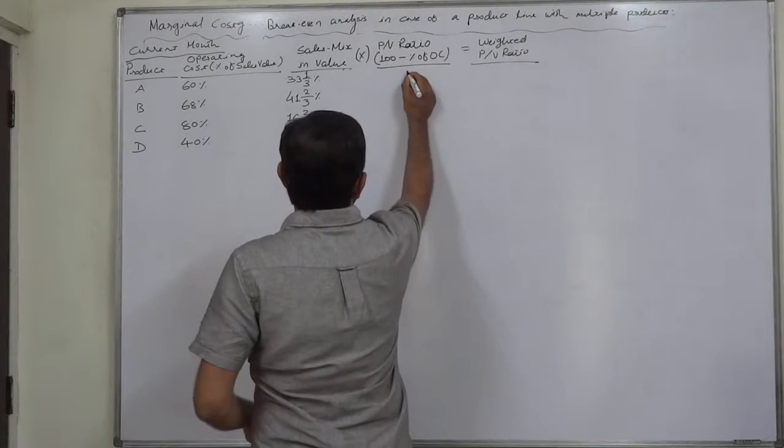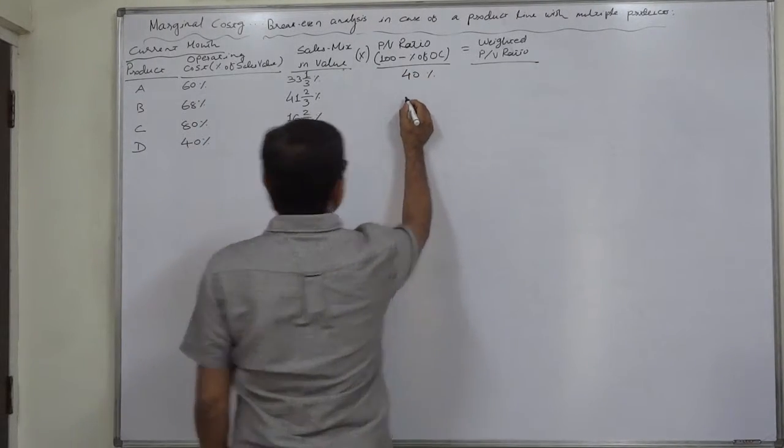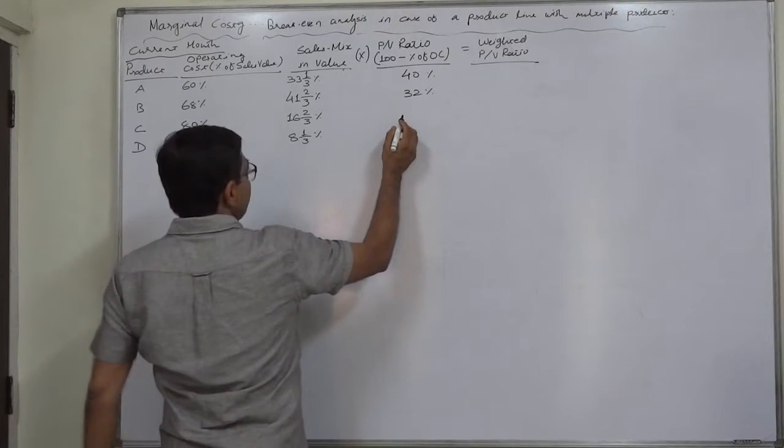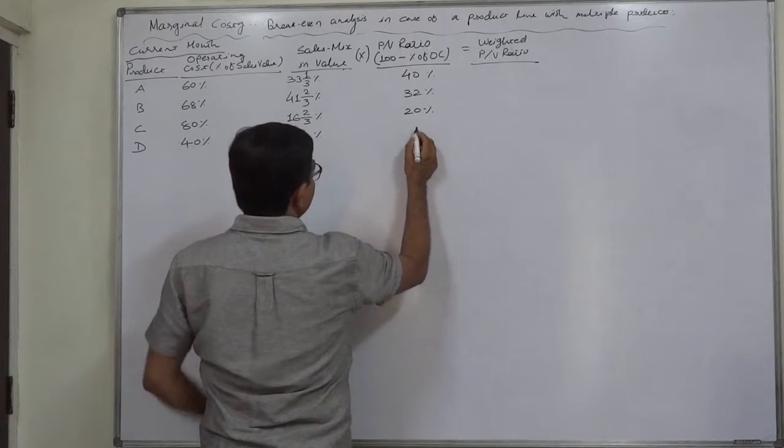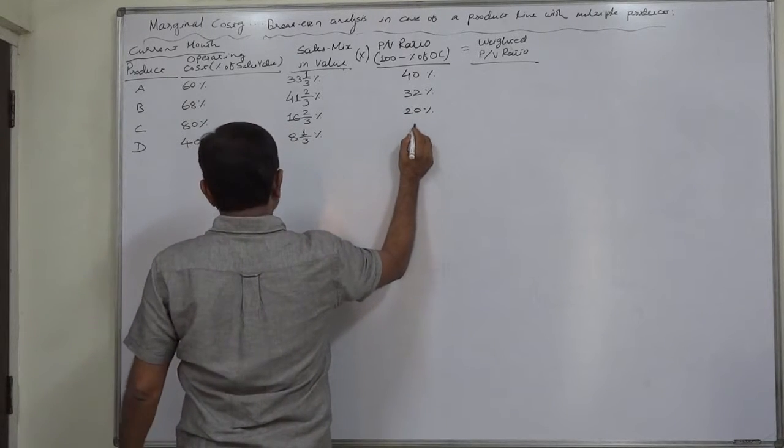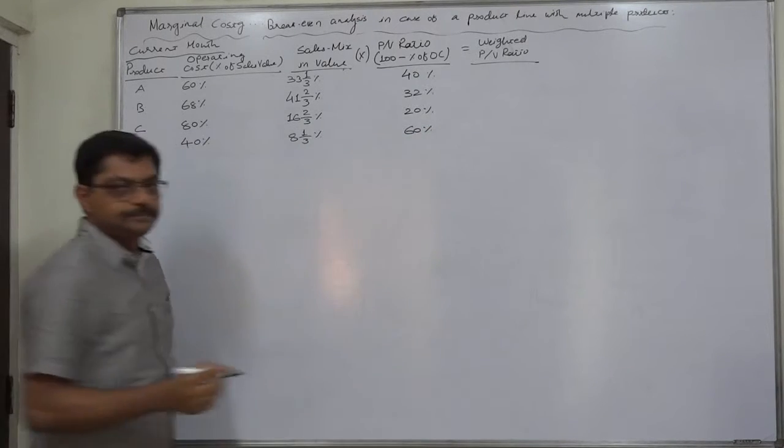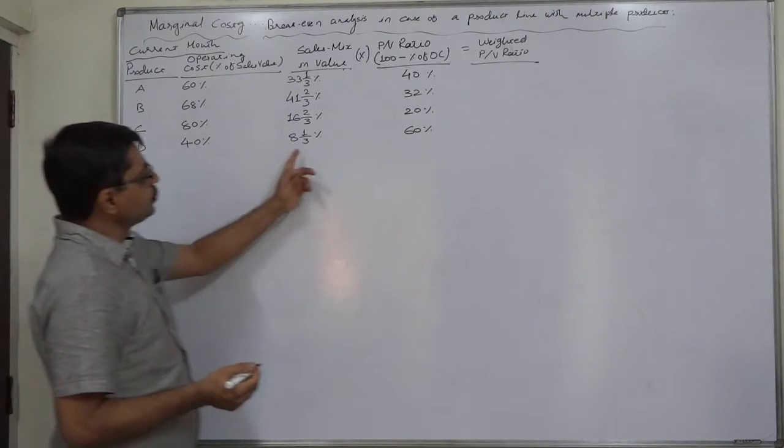In the case of A, 100 minus 60 means 40% is PV ratio. In case of B, 100 minus 68 means 32% is PV ratio. In case of C, 100 minus 80, 20% is PV ratio. And in case of D, 100 minus 40, 60% is the PV ratio.